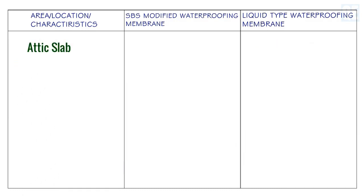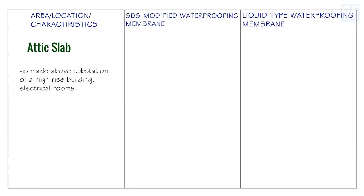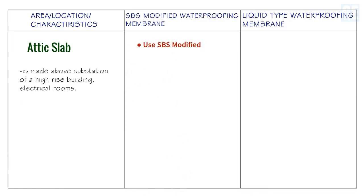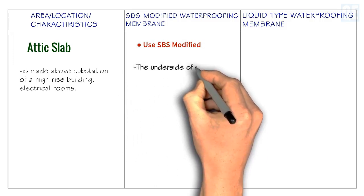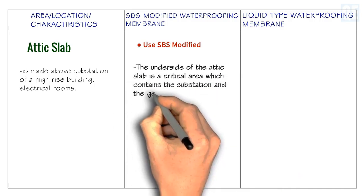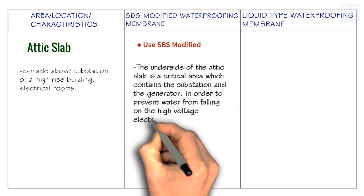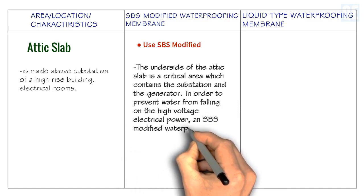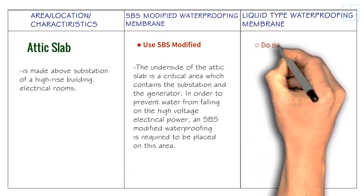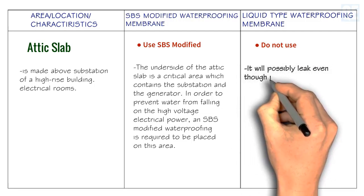For the attic slab, which is built above substations and electrical rooms in high-rise buildings, use SBS modified waterproofing membrane. The underside of the attic slab is a critical area containing substations and generators, so SBS is required to prevent water from falling on high-voltage electrical power. Do not use liquid type waterproofing in this area, as it may possibly leak — it is not as reliable as SBS modified membrane.